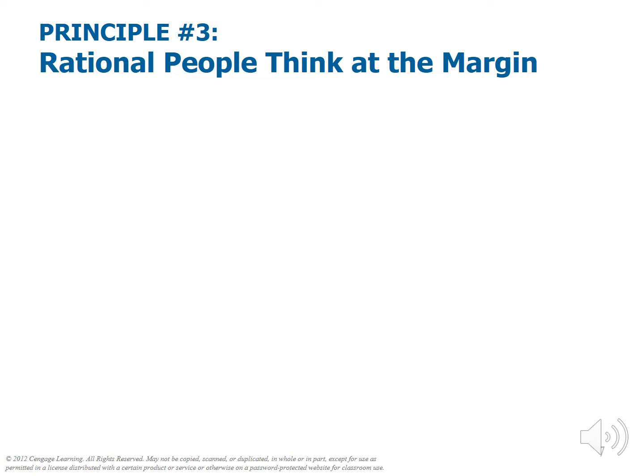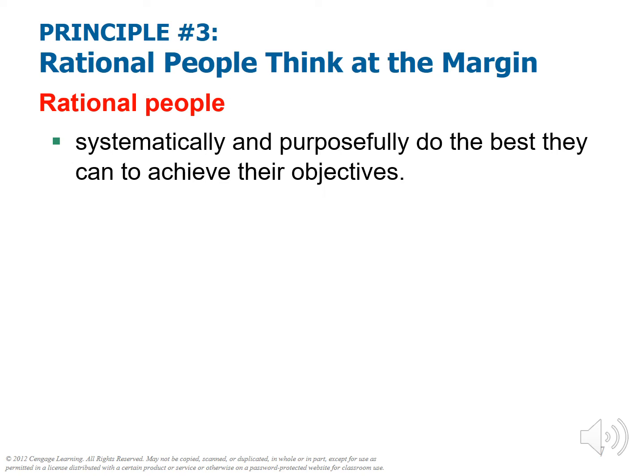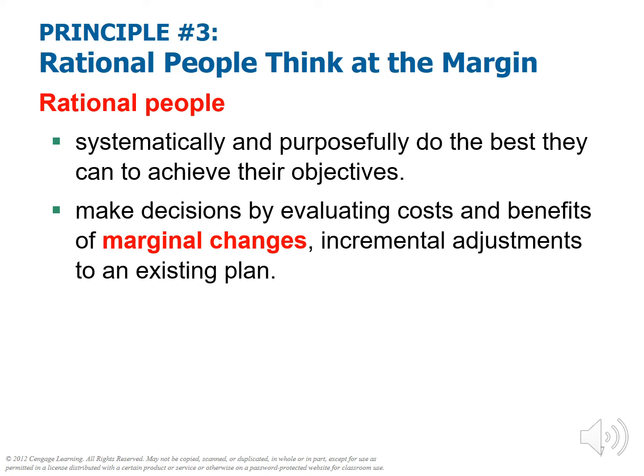Principle number three: rational people think at the margin. Rational people systematically and purposefully do the best they can to achieve their objectives. Economists believe that individuals are rational in their pursuit of goals — systematically and purposefully choosing the best methodology available in order to achieve some end. People make decisions by evaluating costs and benefits at the marginal level. Marginal changes are incremental adjustments to an existing plan. In economics, we're not thinking about totals as much as we're thinking about marginals.